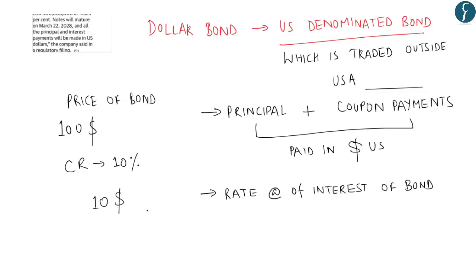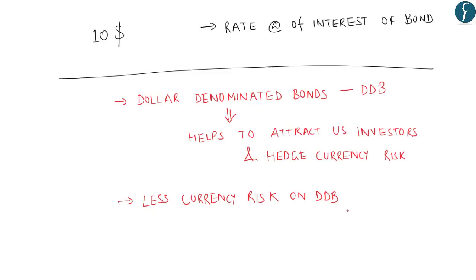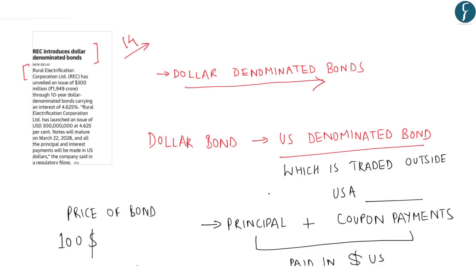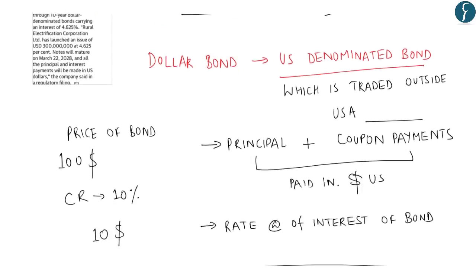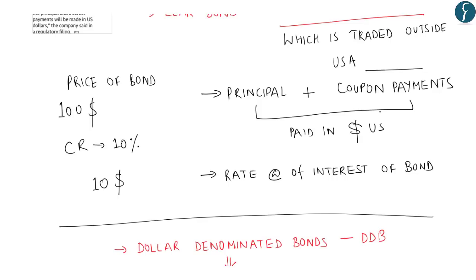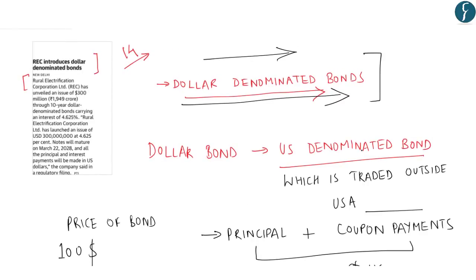Such issuance of dollar denominated bonds helps to attract US investors and hedge currency risk. There is less currency risk on dollar bonds for US-based investors looking to access international debt markets compared to non-US denominated bonds. This topic becomes important from the prelims point of view, as in previous years a question on masala bonds was asked. A similar question can be asked related to dollar denominated bonds — we know they are US-denominated bonds traded outside the USA, with principal and coupon payments made in US dollars.